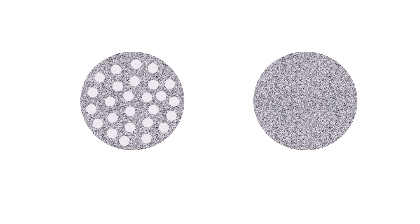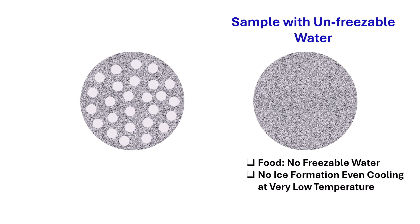Because DSC behavior depends on freezable or unfreezable water content in a food sample. In the case of a sample containing unfreezable water, there is no formation of ice even cooling at very low temperature. Whereas ice is formed in the sample containing freezable water.